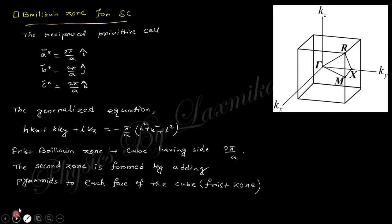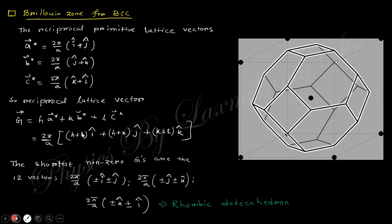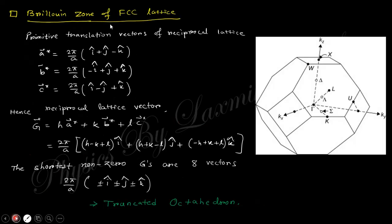For the Brillouin zone of a simple cubic: using the primitive cell in reciprocal space derived earlier, the generalized equation gives a cubic first Brillouin zone, and the second zone takes the shape of a truncated pyramid. For body-centered cubic, the reciprocal lattice is FCC, and substituting the reciprocal translational vectors gives 12 non-zero G vectors, resulting in a rhombic dodecahedron with 12 faces as the first Brillouin zone. For FCC, the primitive cell and corresponding reciprocal lattice are used.